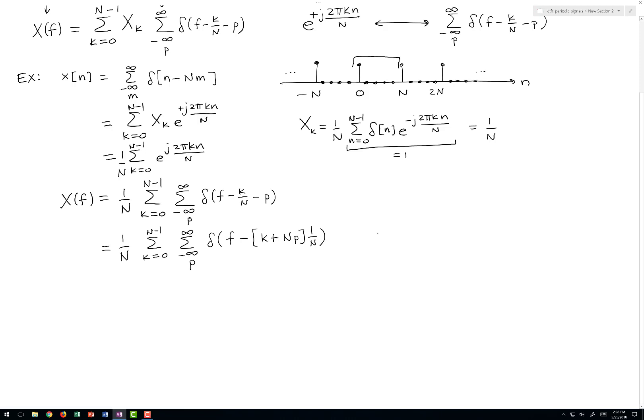And the change of variables that we'll use will let u be equal to k plus N p. And now as k takes on values between 0 and N minus 1, and as p takes on values over all the integers,